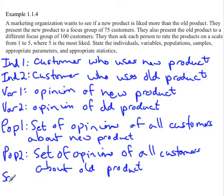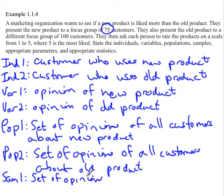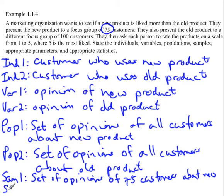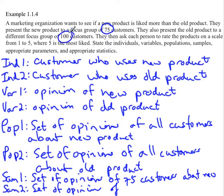The samples look exactly like the populations except instead of being about all individuals, it's about how many they actually measured. For the new product there were 75, so sample one is the set of opinions of 75 customers about the new product. Sample two — looking at the old product group — had 100, so it is the set of opinions of 100 customers about the old product.